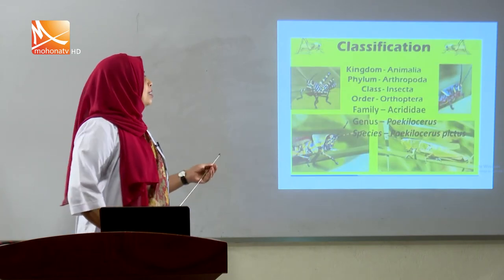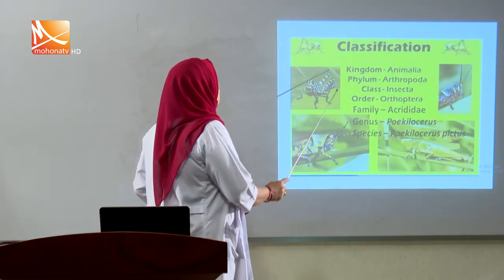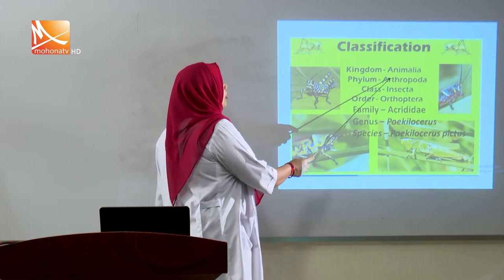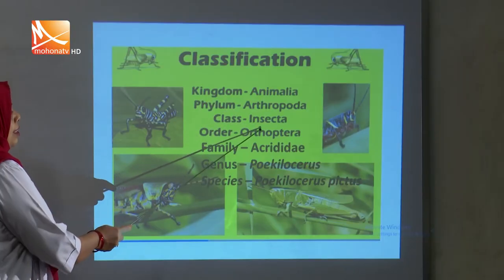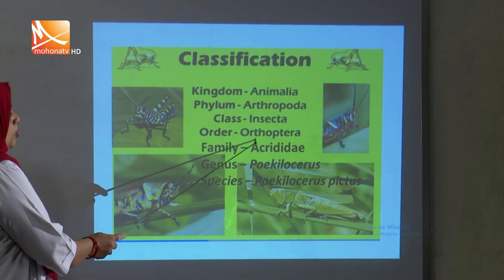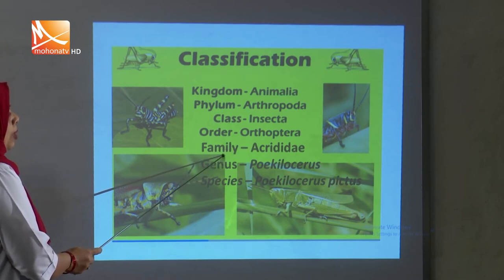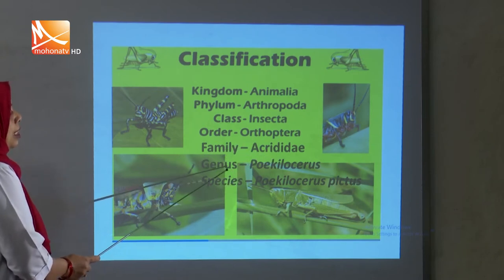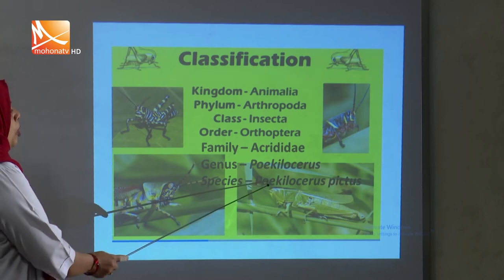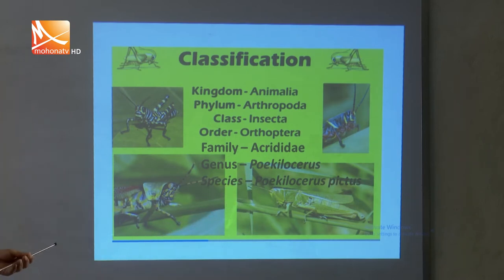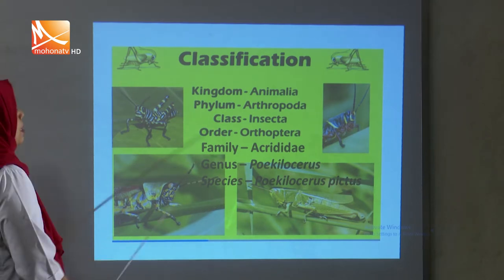The classification of Grasshopper: Kingdom Animalia, Phylum Arthropoda, Class Insecta, Order Orthoptera, Family Acrididae, Genus Poikiloceras, Species Poikiloceras pictus. So the Grasshopper of today's class is Poikiloceras pictus.